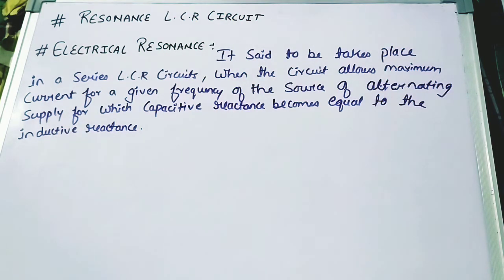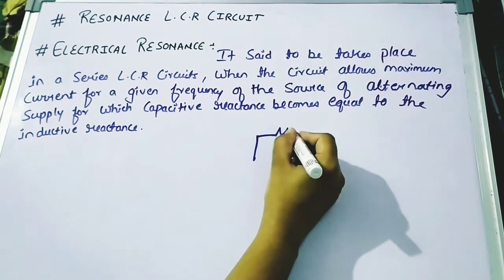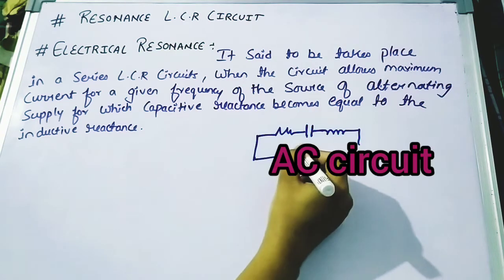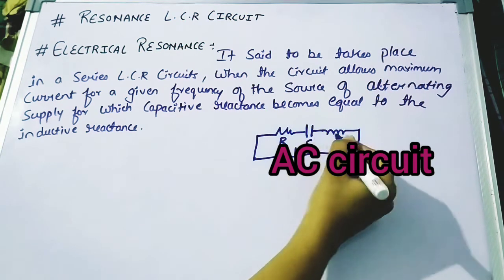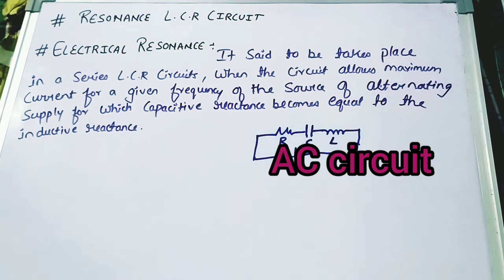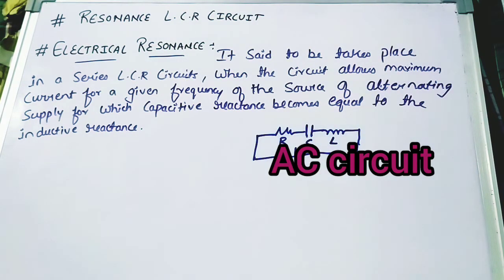Here we are going to discuss about electrical resonance. As we have seen in an LCR circuit, we have resistance, capacitance, and inductance connected in series. When these elements are connected in series, the overall resistance of the circuit is represented by the impedance Z. Resonance is basically used where we want to enhance any frequency or oscillation.